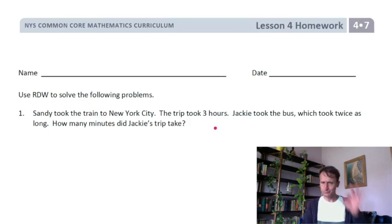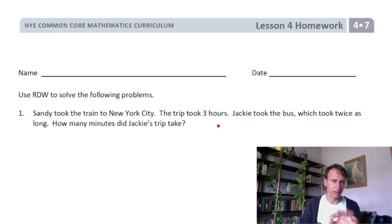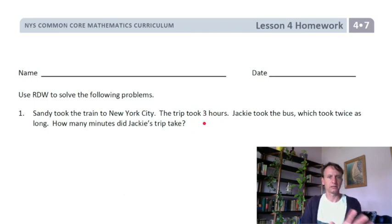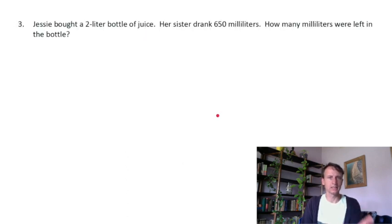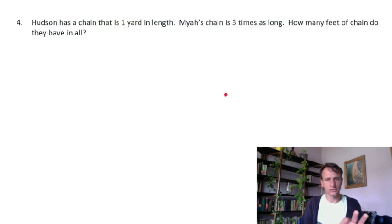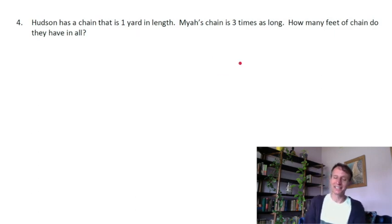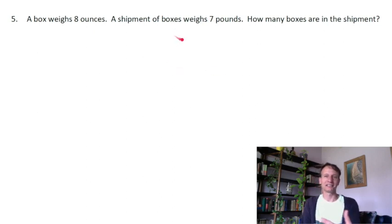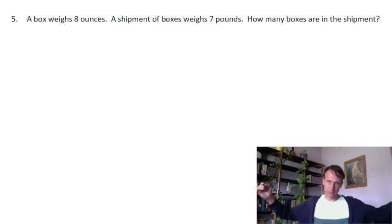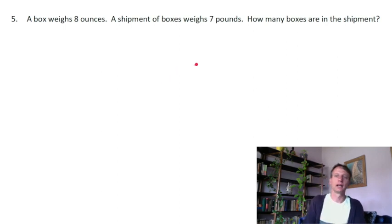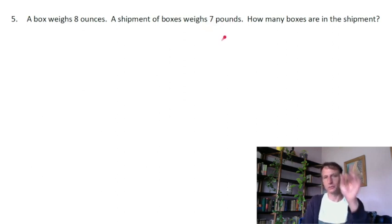Now you get to the homework — about six questions, very similar to what we just did in the problem set. Head over to the homework time video and we'll draw, redraw, and write everything out completely. The homework covers weight again, liters and milliliters, and instead of rope it's chain. There's also a shipment-of-boxes problem — a shipment means a bunch of boxes — with a nice shortcut I'll show in the video.